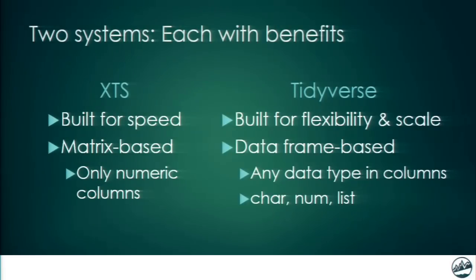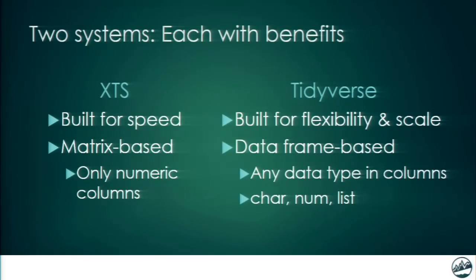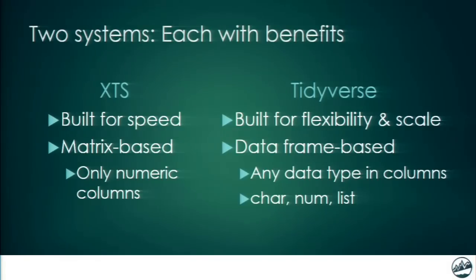So we've got actually two systems — XTS and Tidyverse — each with benefits. XTS is built for speed, it's matrix-based, it deals with wide format because it can only handle numeric columns, but it is fast. Tidyverse, on the other side, deals with data frames. It's a little bit slower, but it's flexible and it's built for scale. It can handle any types of data in the columns, which allows us to work with long format data frames. Basically it allows you to group by subsets of the data and apply functions to those groups — that's the main advantage.